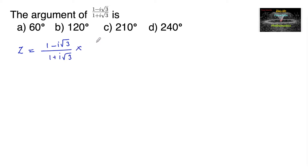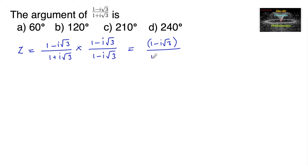Let us multiply and divide by the conjugate of the denominator. So we write (1 - i√3) / (1 + i√3) multiplied by (1 - i√3) / (1 - i√3), giving (1 - i√3)² in the numerator. The denominator uses the identity (a + b)(a - b) = a² - b², so the denominator becomes 1² - (i√3)².